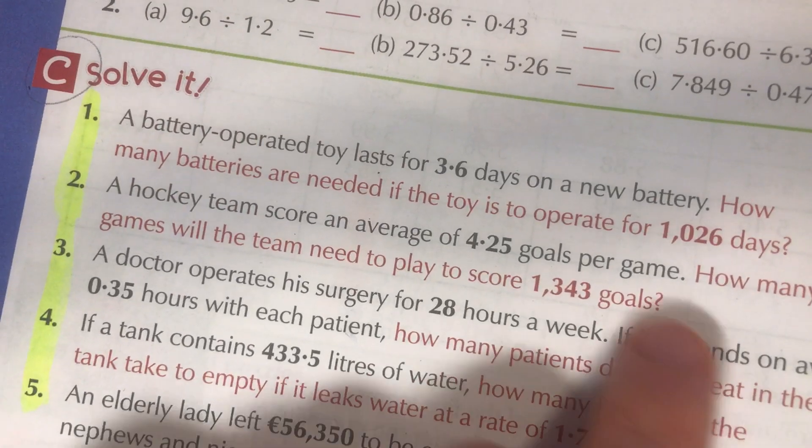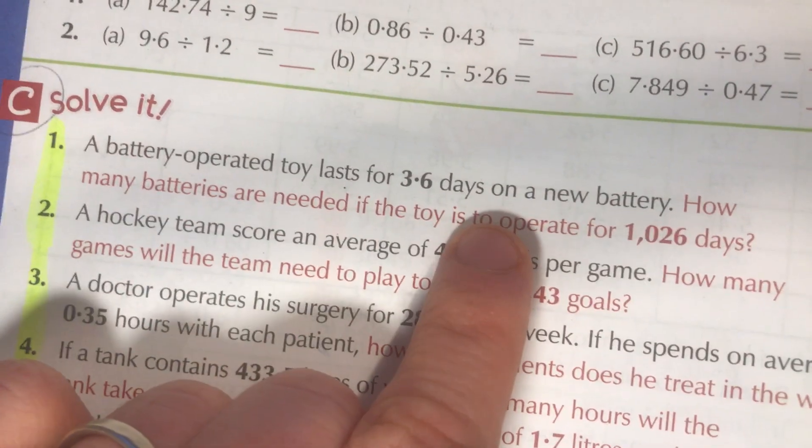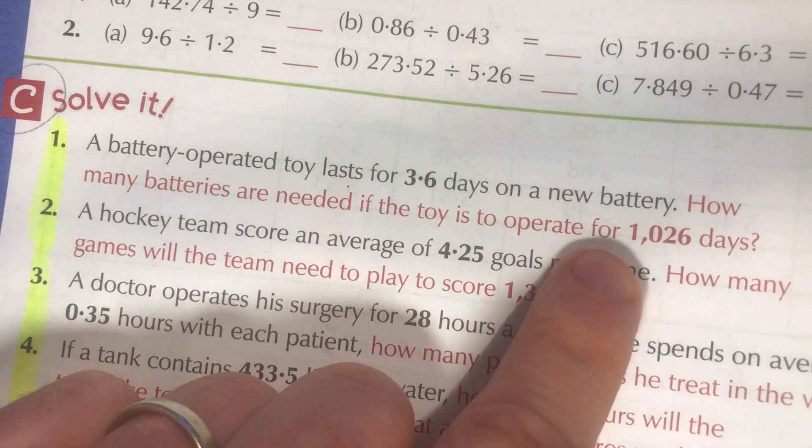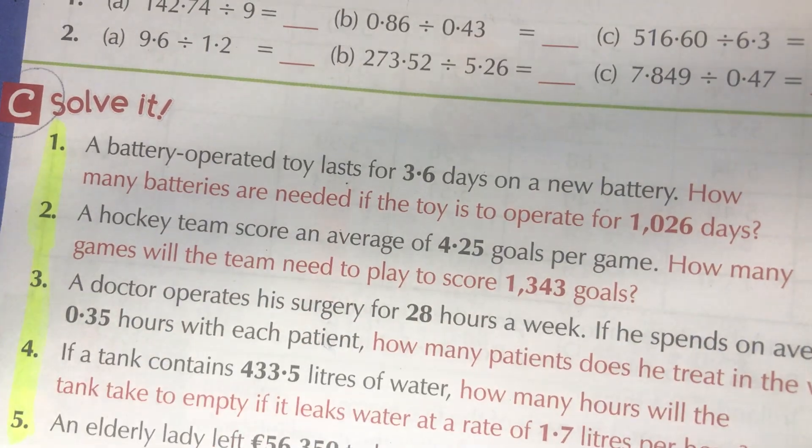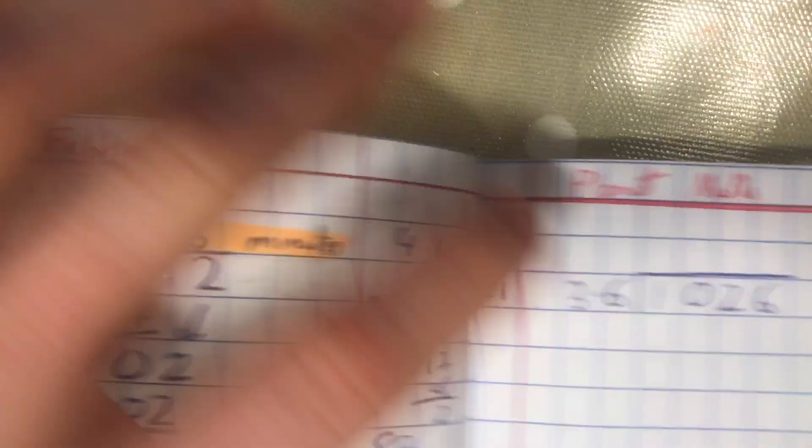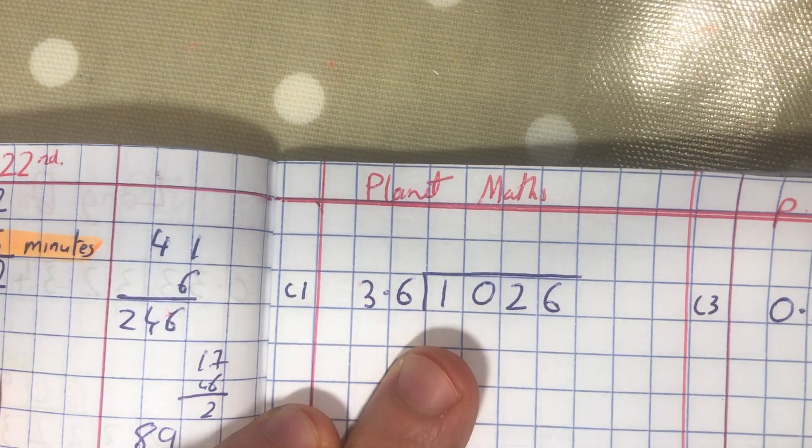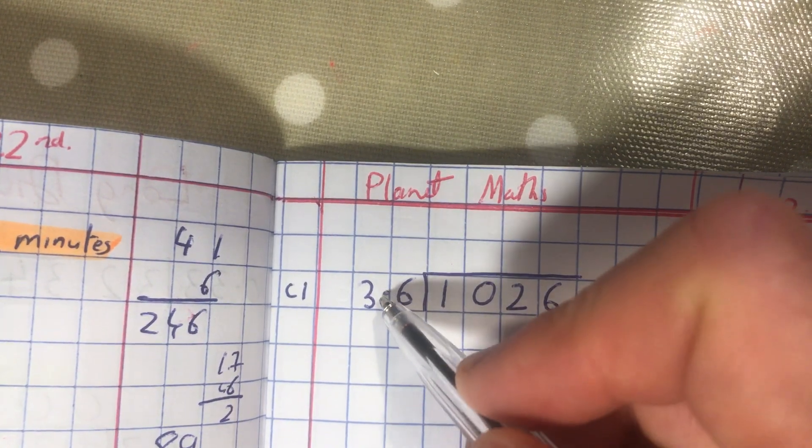Now I just want to show you here question one. It says a battery operated toy lasts for 3.6 days on a new battery. How many batteries are needed if the toy is to operate for 1026 days? Now that's similar enough to yesterday's one but just a little bit different. So look here, what we have is 1026 divided by 3.6, and as you were doing yesterday you were excellent at it, we need to get rid of the decimal that's out here.